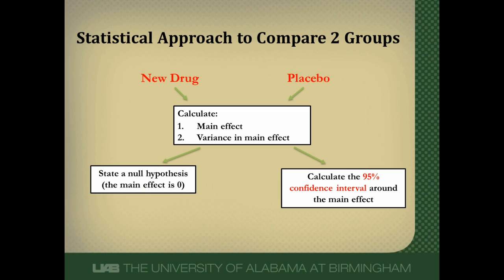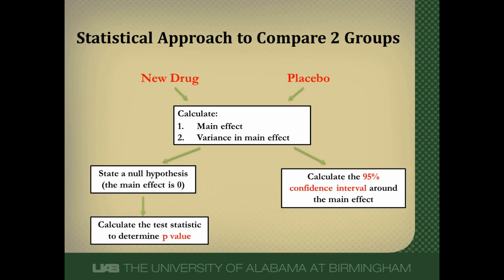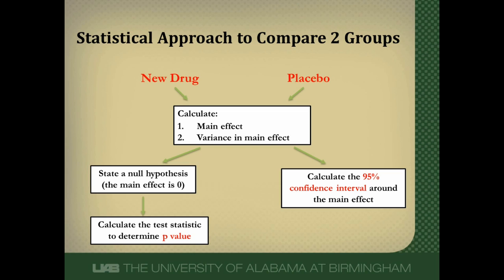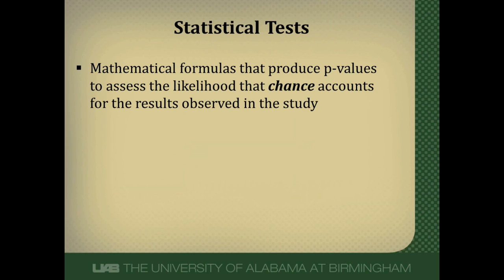In an experiment we develop a null hypothesis, and in a superiority trial that null hypothesis is that the main effect is zero. Then we calculate our test statistic and determine a p-value. Statistical tests are just mathematical formulas that produce test statistics — we could have a t-statistic, a z-statistic, a chi-square — and then we compare our test statistic to a table and get our p-value.